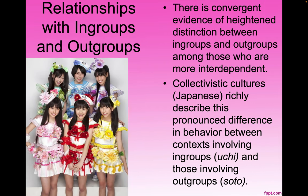There is convergent evidence of heightened distinction between in-groups and out-groups among those who are more interdependent. Collectivistic cultures, such as the Japanese, richly describe this pronounced difference in behavior. In Japan, they call the in-group 'Uchi' — your buddies, your BFFs — and those involving out-groups are 'Soto,' people that aren't like you and don't do the same things you do.